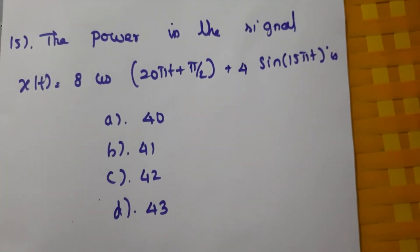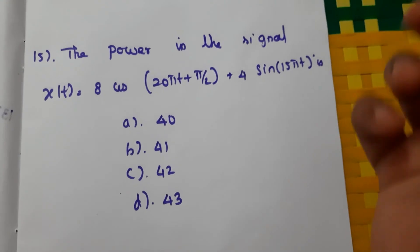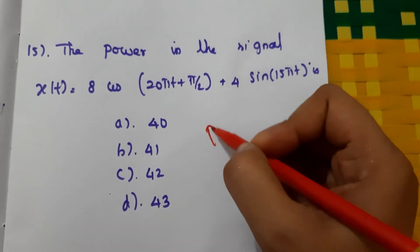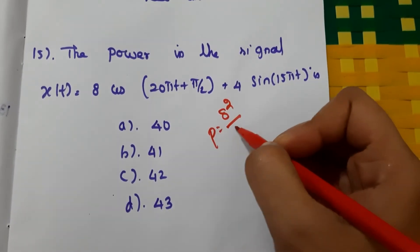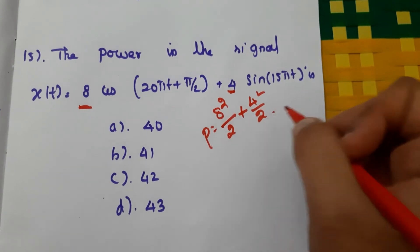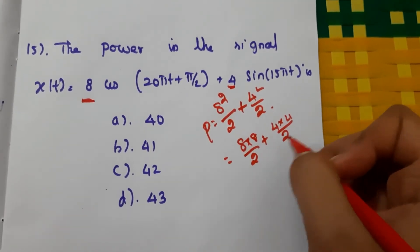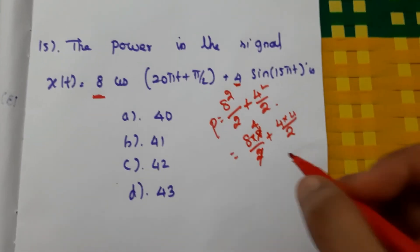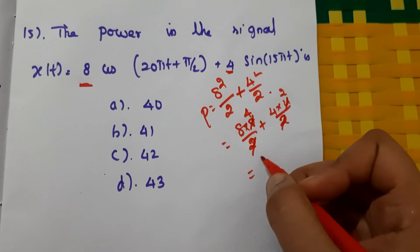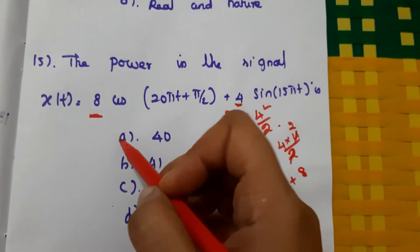Fifteenth question: find the power in the signal x(t) = 8cos(πt + π/2) + 4sin(15πt). Using the power formula: power = 8²/2 + 4²/2 = 64/2 + 16/2 = 32 + 8 = 40. So the answer is A, 40 watts.